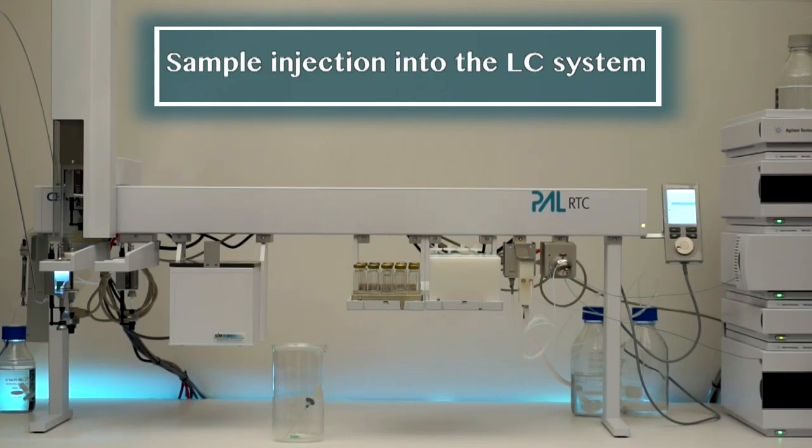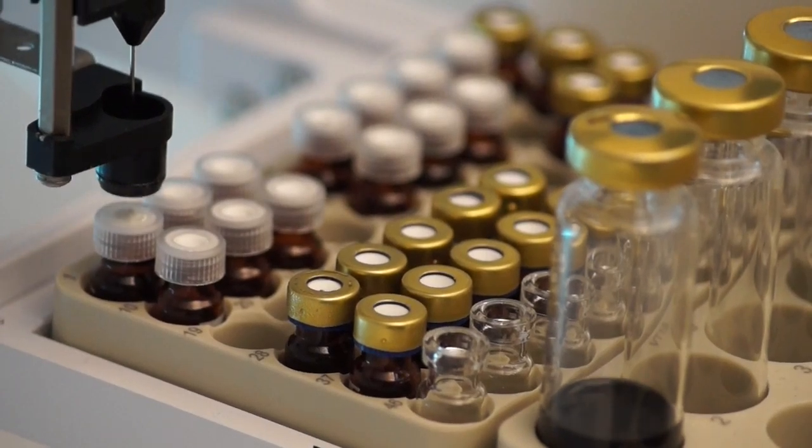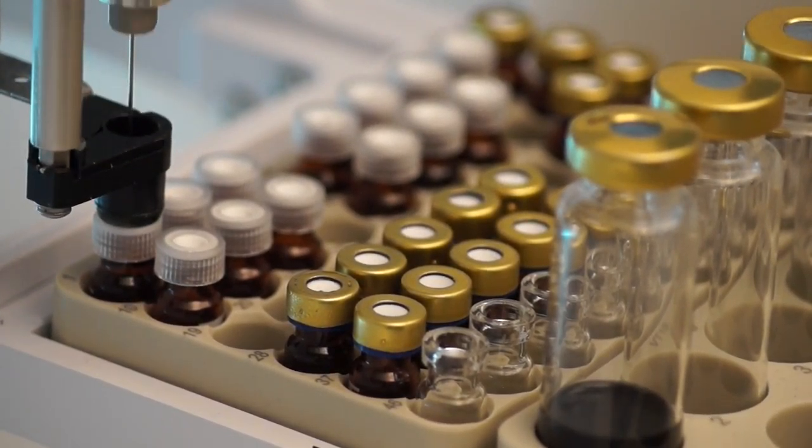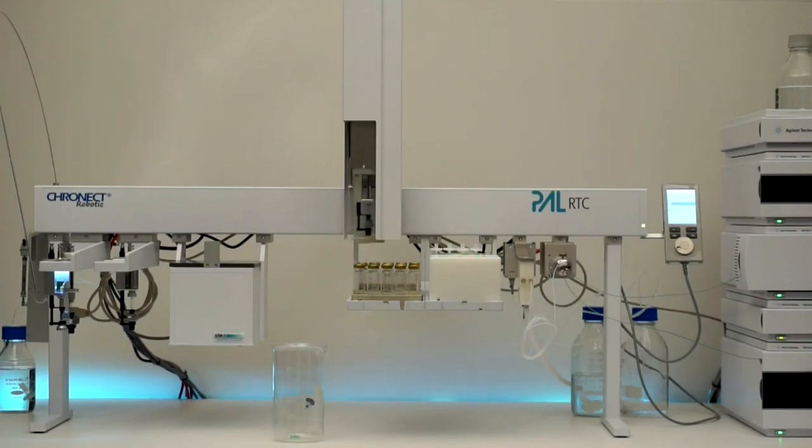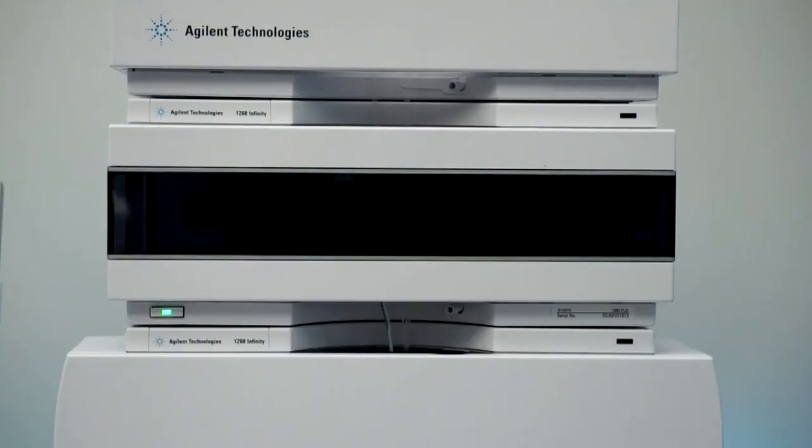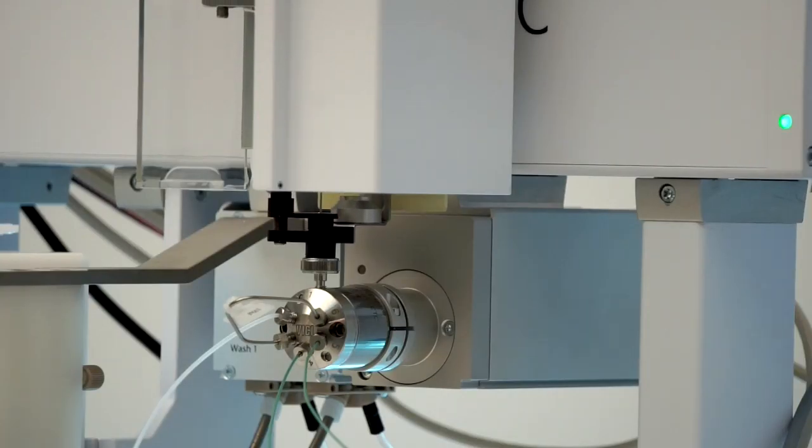Sample injection into the LC system. For injection, the 100 µL syringe is pre-purged with the sample and the sample valve is filled. The robot then waits for the ready signal of the LC and injects the sample into the LC system.